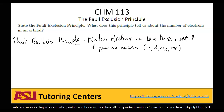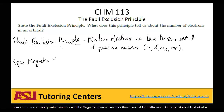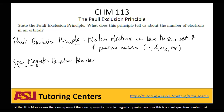No other electron can have those exact same four quantum numbers — they can have three of the same, but not all four. The first three quantum numbers, n, l, and M sub L, are the principal quantum number, the secondary quantum number, and the magnetic quantum number — all discussed in the previous video. The last one, M sub S, is the spin magnetic quantum number.